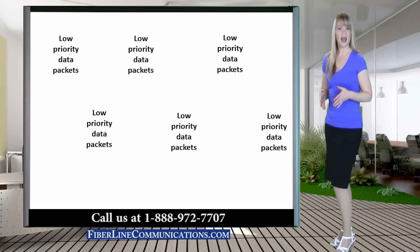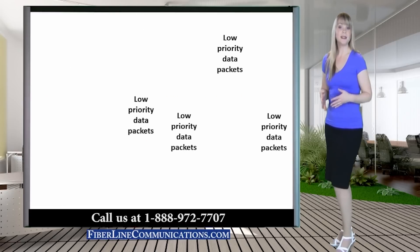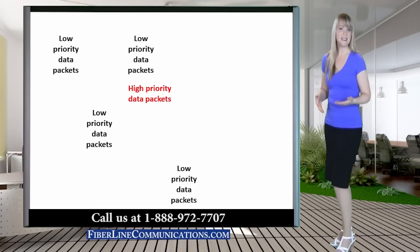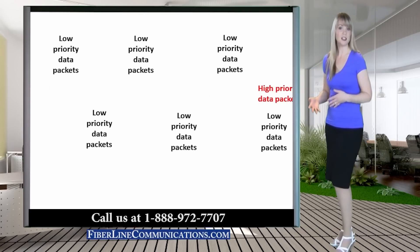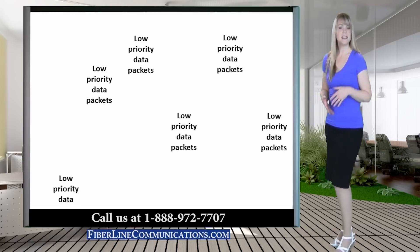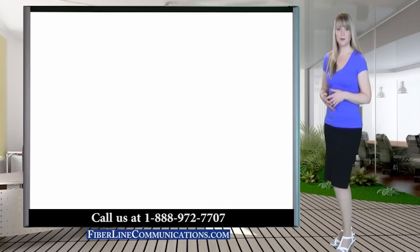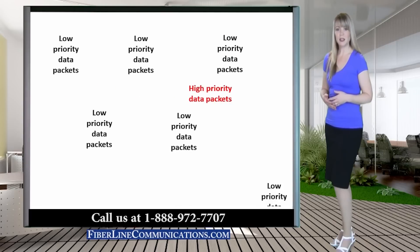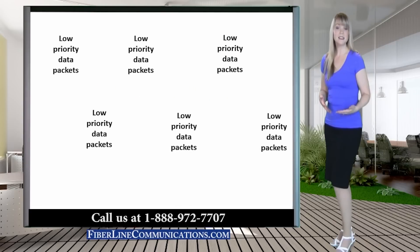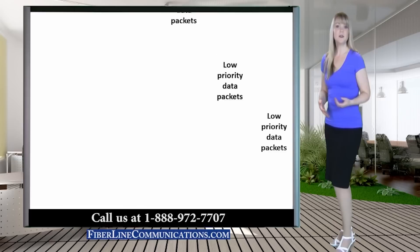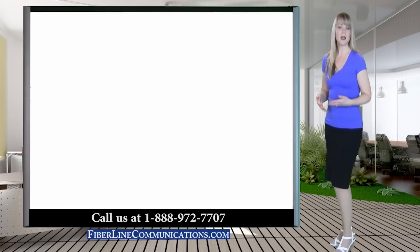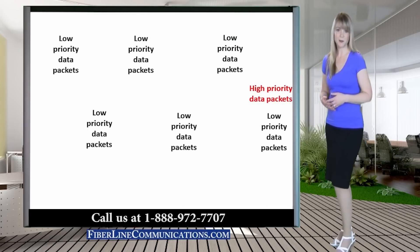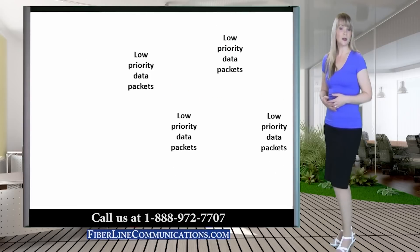With COS, each data packet is provided a priority designation, so that data packets that are more important, or packets for latency and packet loss sensitive applications like VoIP, receive highest priority as they move through the network. COS also ensures that more routine applications which are less sensitive to latency and packet loss, such as email, receive lower priority, so that they do not compete with high priority packets for finite bandwidth resources.